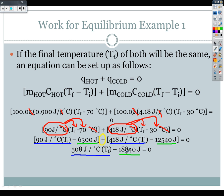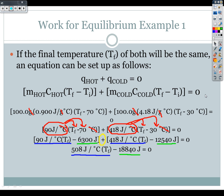So if I do that, I can get my negative 6300 joules plus 418 joules, which gives me negative 18,840 joules and then my 508 joules per degree Celsius times T_f.